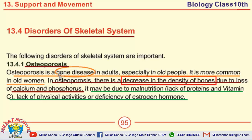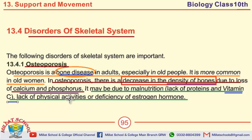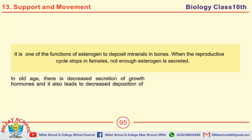The first MCQ on osteoporosis is taken from its definition: in osteoporosis there is a decrease in density of bones due to loss of calcium and phosphorus. Another MCQ: vitamin C deficiency in the body causes osteoporosis. Deficiency of estrogen hormone also causes osteoporosis. These were the important short questions and MCQs on osteoporosis.